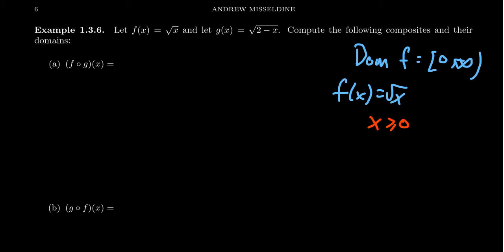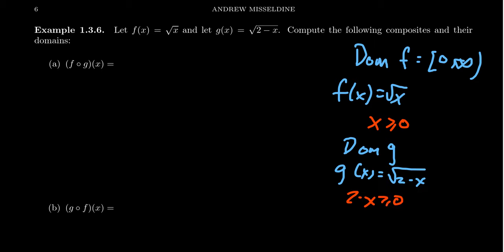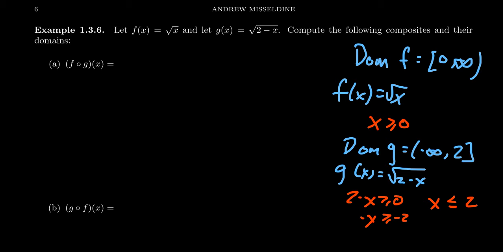We can do a similar thing for the domain of g. With g of x given as the square root of 2 minus x, we have to take the radicand — which is 2 minus x — and set it greater than or equal to zero. Subtracting two from both sides gives negative x is greater than or equal to negative two, then dividing both sides by negative one gives x is less than or equal to two. Notice that since we divided by negative one, the inequality symbol switches direction. So the domain of g is negative infinity to two.